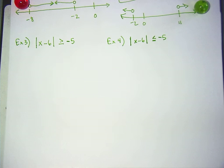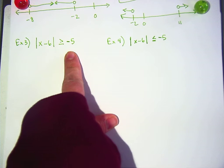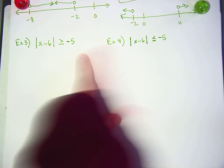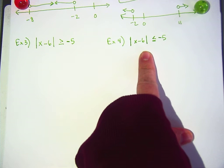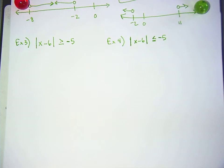One of these is a no solution. One of them is infinite. The question is, which one's which and why? So I need you to look at it—remember, this is an absolute value is greater than or equal to negative 5, and this one's an absolute value is less than or equal to negative 5. So one of them, no matter what you put in there, it always works, and one of them, no matter what you put in there, it never works.